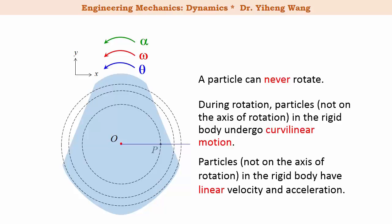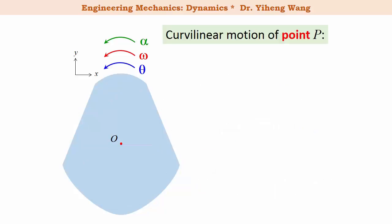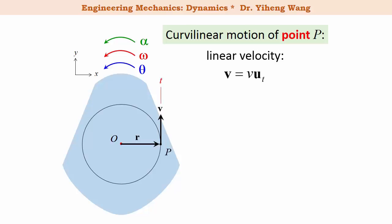When the rigid body undergoes rotation about a fixed axis through point O perpendicular to the x-y plane, a point P on this rigid body undergoes curvilinear motion following a circular path. The position of point P measured from the fixed axis is position vector r, and its linear velocity is always tangent to the path. The speed v equals ds/dt, and since s equals r times theta, therefore v equals r times d theta/dt, which is the angular velocity omega of this rigid body.